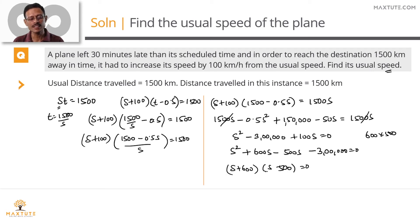So s plus 600 equals 0, translating to s equals minus 600. s minus 500 equals 0, translating to the fact that s is equal to 500. The flight speed, the speed of the plane cannot be a negative number. So the usual speed s is equal to 500 kilometers per hour.